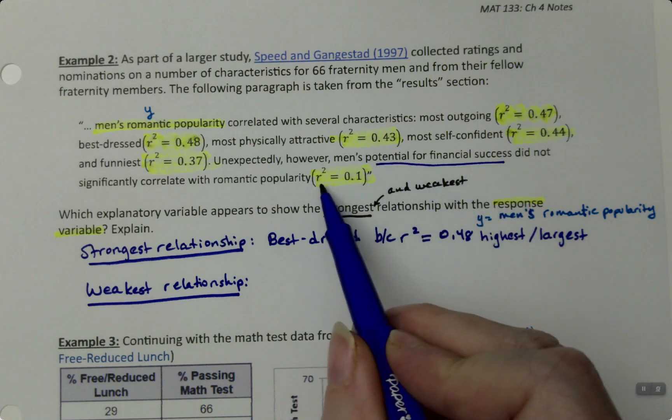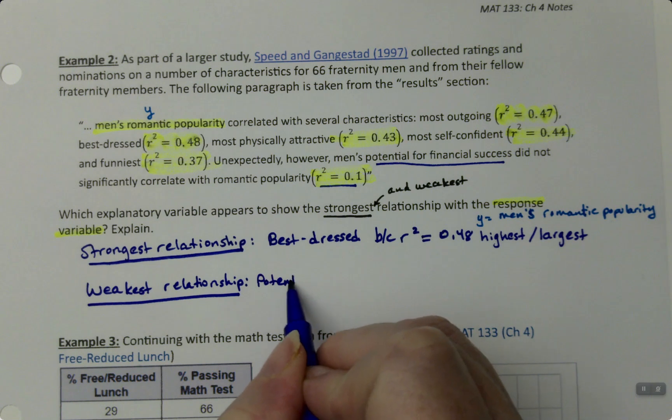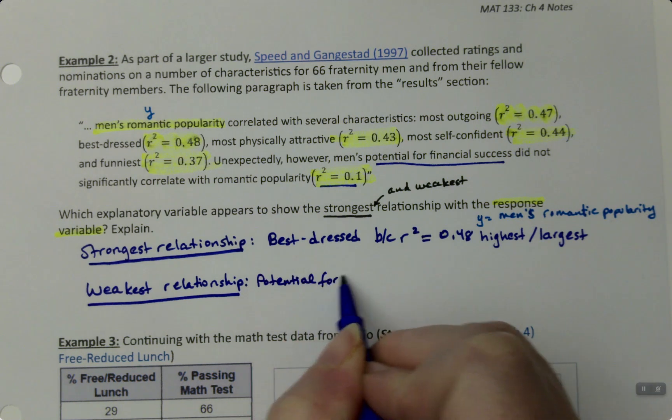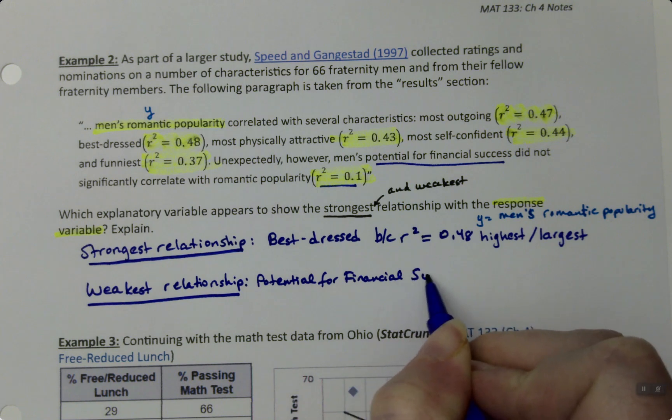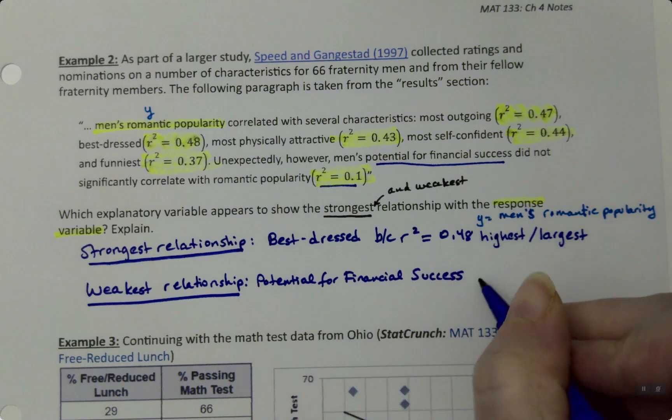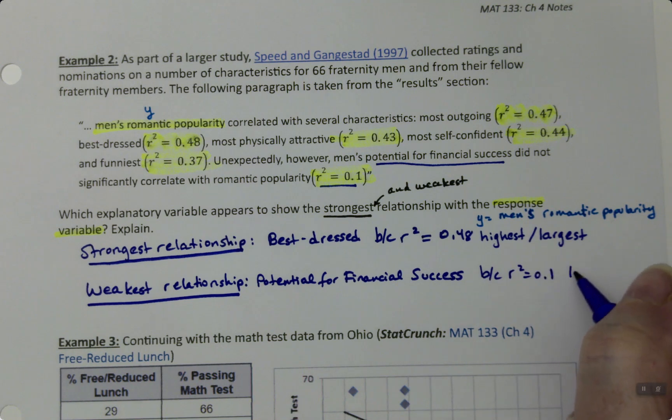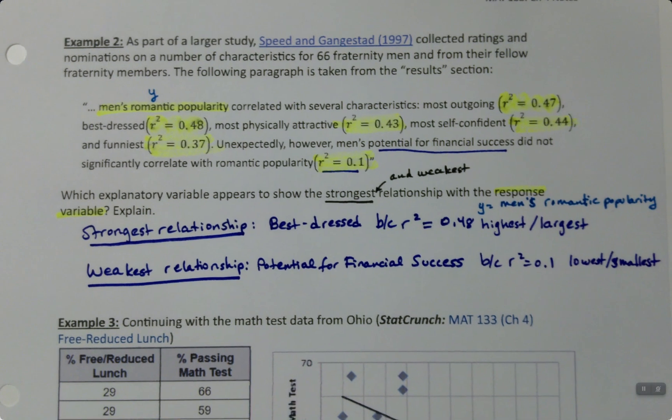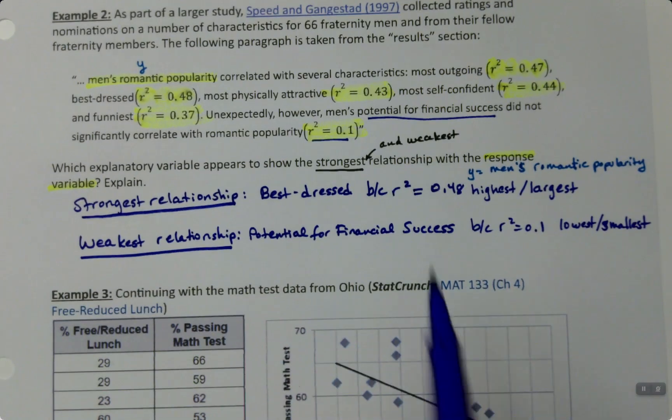Potential for financial success only led to an R-squared value of 0.1, which was the lowest or smallest. That's what R-squared is really great at: the bigger the value of R-squared, the stronger that relationship; the smaller it is, the weaker that relationship.